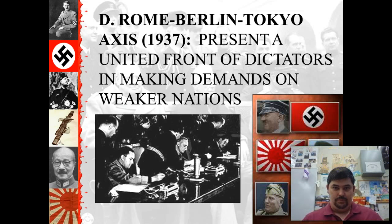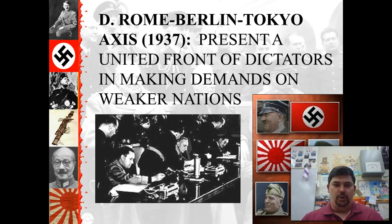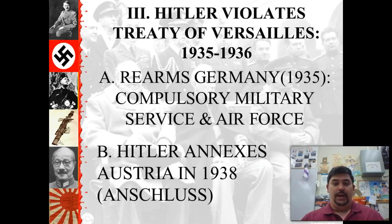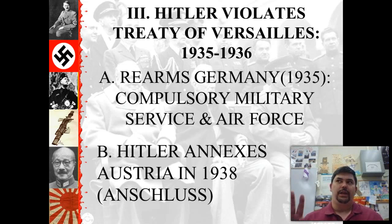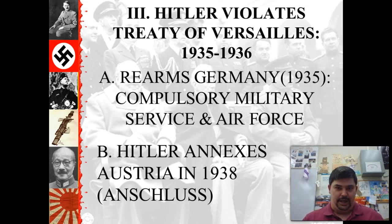He makes friends with all the other bullies in Europe, including Japan and Italy — Mussolini pictured here. They form the Rome-Berlin-Tokyo Axis, which gives us a convenient nickname for the bad guys in World War II, and they are the bad guys — make no mistake about it. Hitler will immediately begin breaking the Treaty of Versailles. If you read Mein Kampf, you'll see over and over again that he hates the Treaty of Versailles.